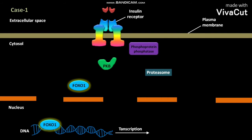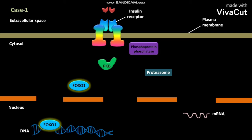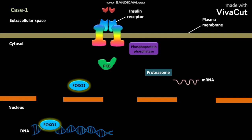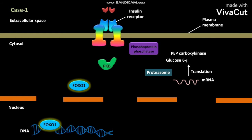The transcription produces mRNA. This mRNA moves out of the nucleus and reaches the cytosol, where it undergoes translation to produce PEP carboxykinase and glucose-6-phosphatase.